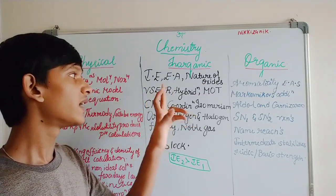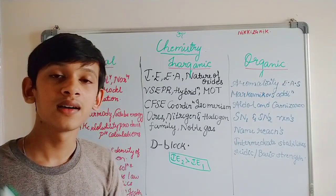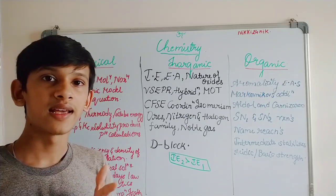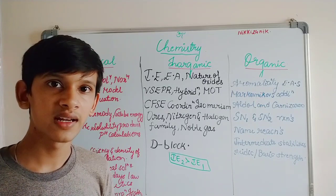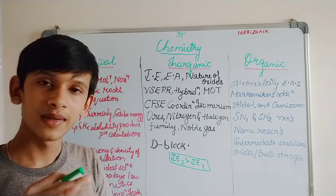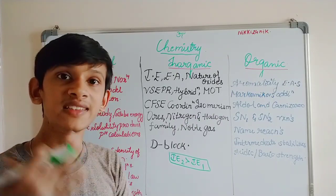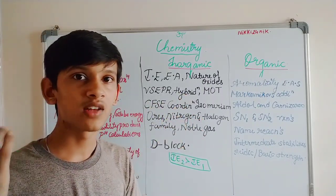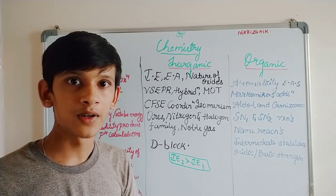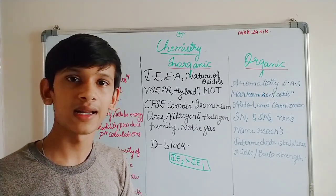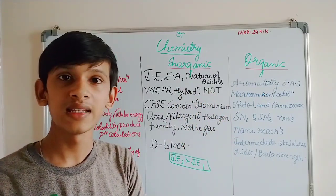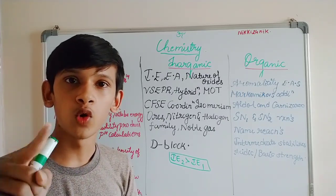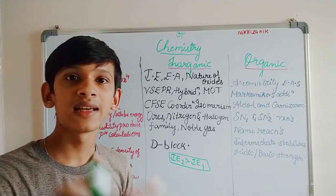Next is VSEPR theory in the chemical bonding chapter — Valence Shell Electron Pair Repulsion theory. These theories are based on molecular structure: linear, planar, trigonal pyramidal, tetrahedral, bipyramidal, square planar, bent, T-shaped, and more — all with NCERT examples. Next is hybridization formulas covering number of pi and sigma bonds. Then MOT — Molecular Orbital Theory — for molecules like N₂ and O₂, determining whether they are paramagnetic or diamagnetic.